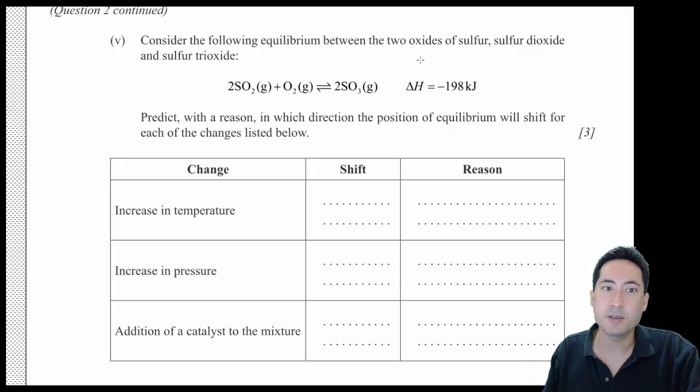Consider the following equilibrium between the two oxides of sulfur, sulfur dioxide and sulfur trioxide. This is importantly a negative value, so always write in straight away that there's energy coming out here. So I'll put heat there, that'll help you with your balancing.